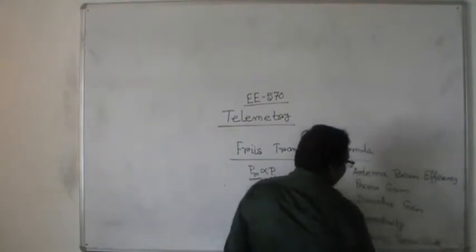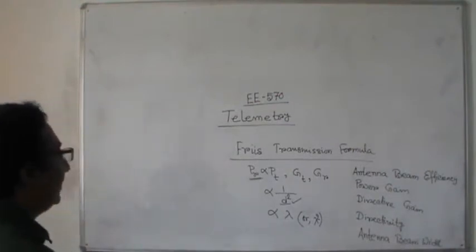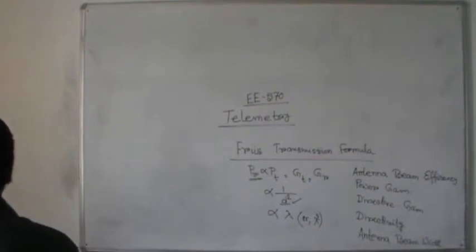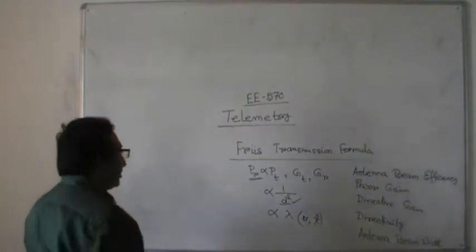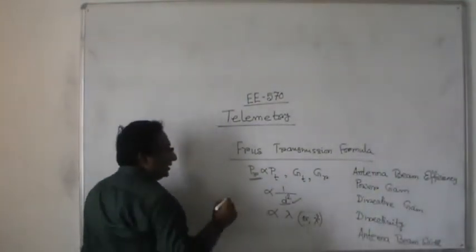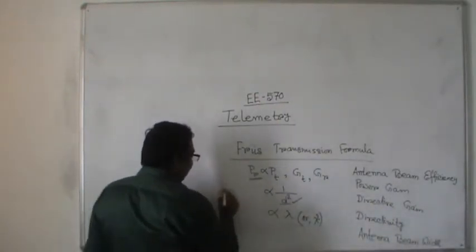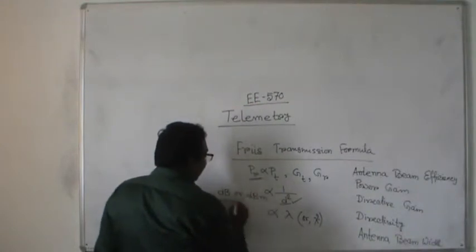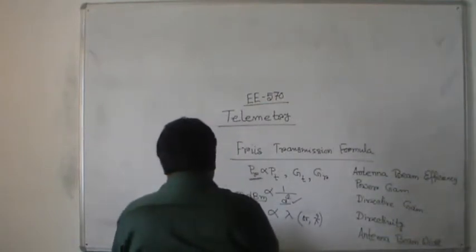All those things will be coming into account in the Friis transmission formula which should be dealt with in telemetry. Now, if we express this Friis transmission formula in terms of decibel or decibel-meter, then there will be one additional term coming into the picture.